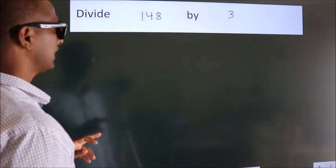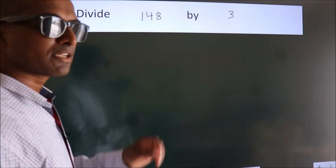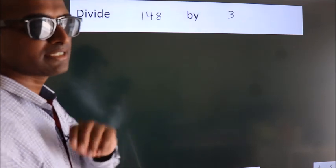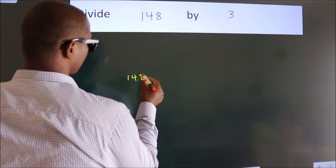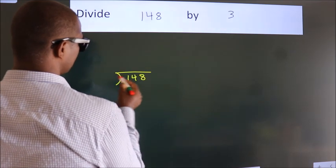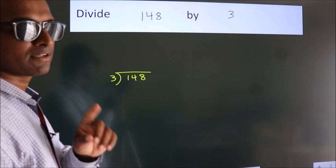Divide 148 by 3. To do this division, we should frame it in this way: 148 here, 3 here. This is your step 1.